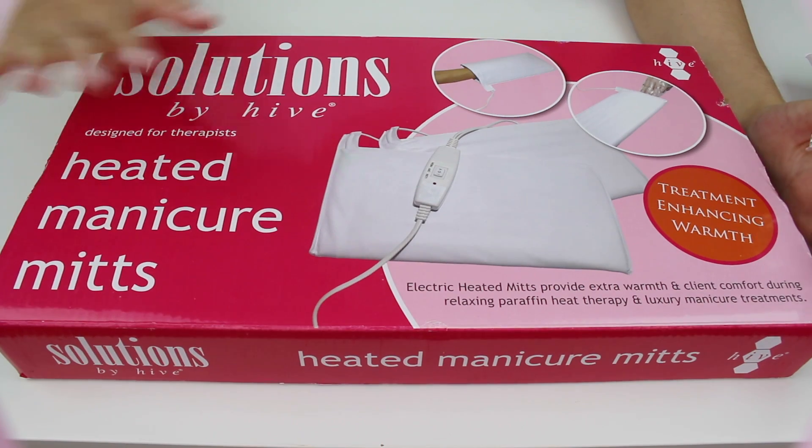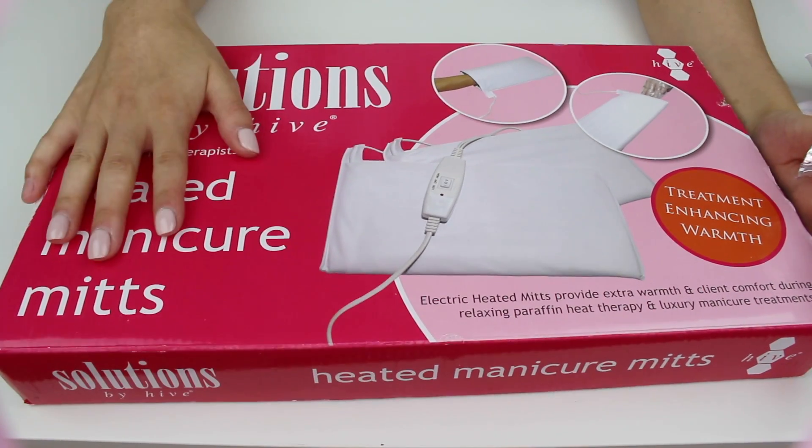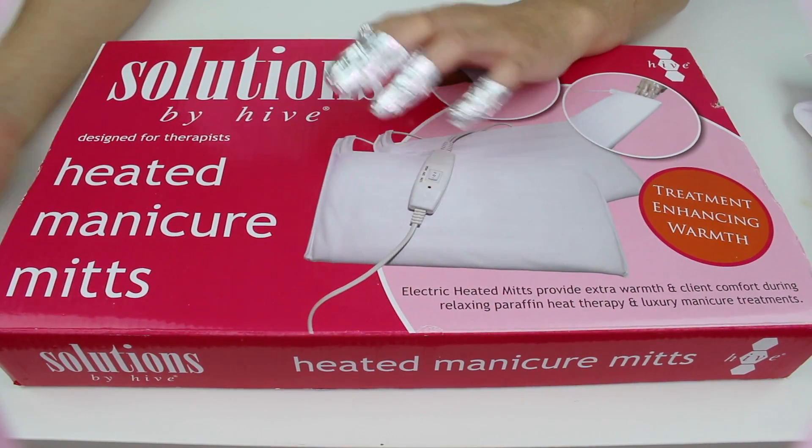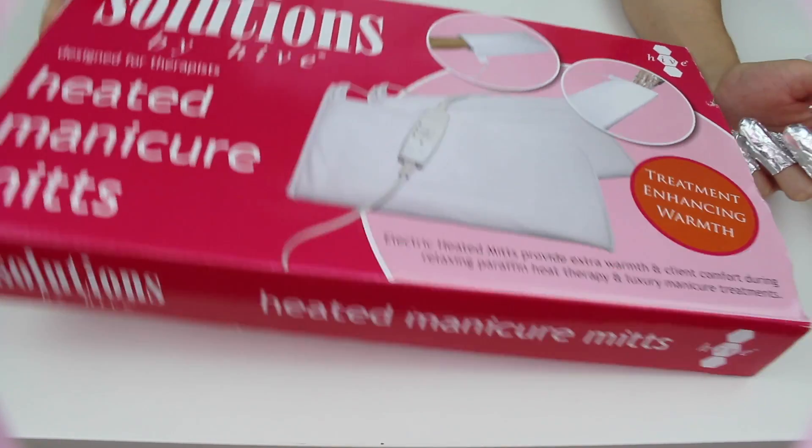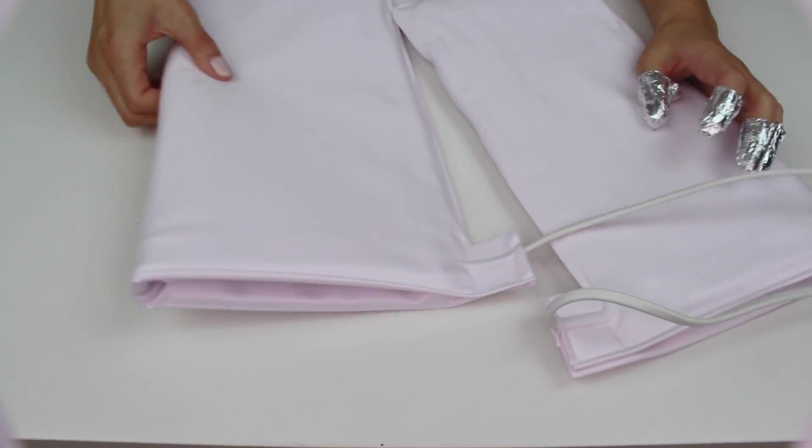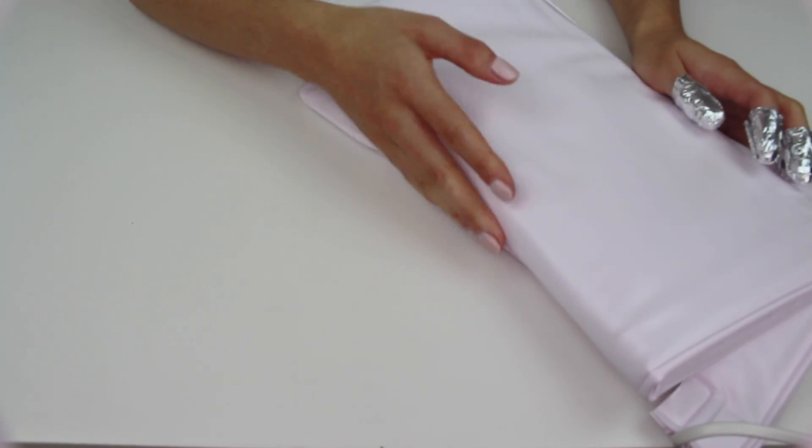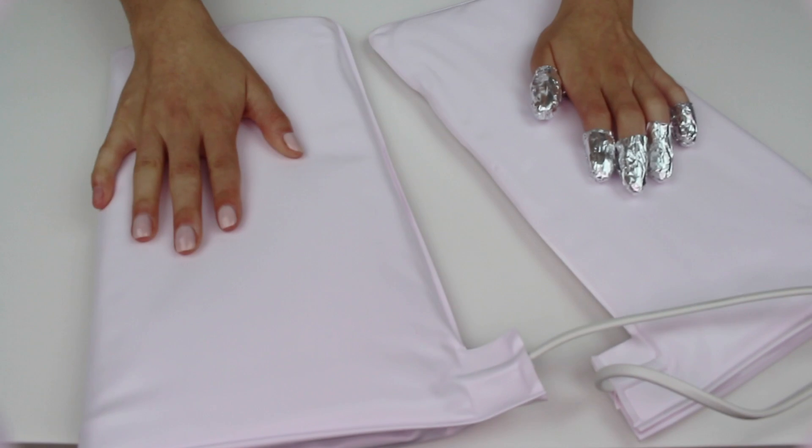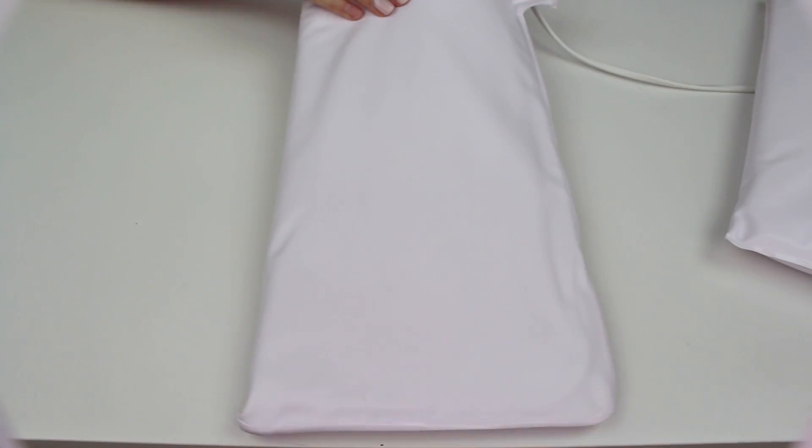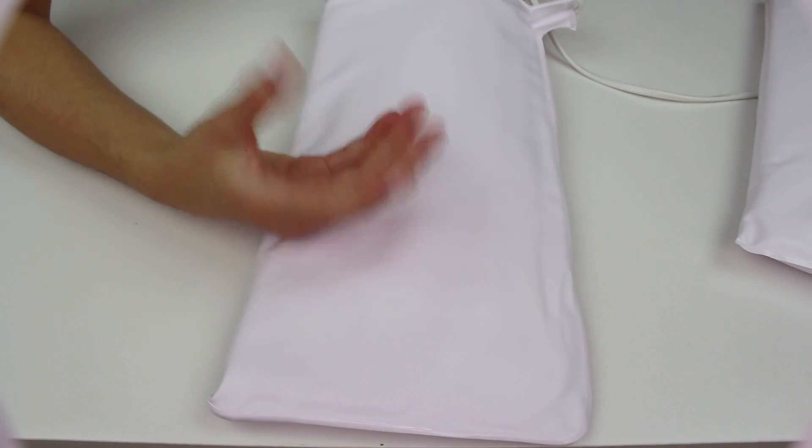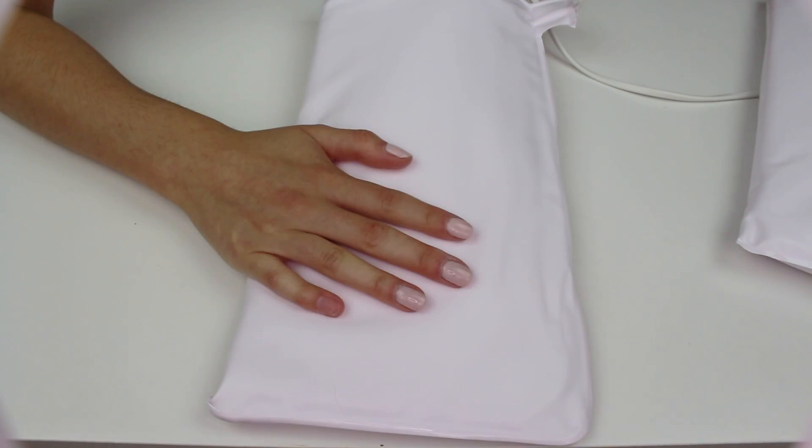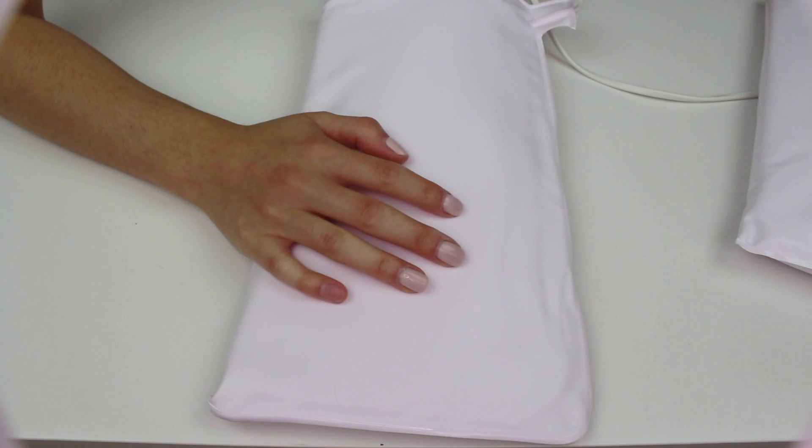I would recommend getting some of these, these are the heated manicure mitts. Before you start the process, I should have mentioned this earlier, you need to plug it in so it's ready and it's all heated up. These are what they look like. Make sure you don't put them one on top of the other because it will overheat. You need to keep them separate and then you just slip it in there. The heat will help break down the gel polish a lot faster and a lot nicer.